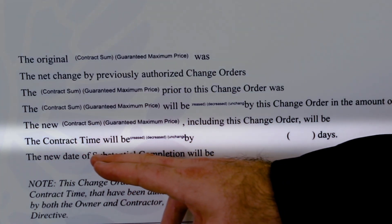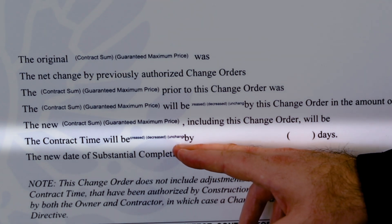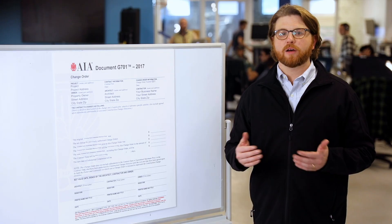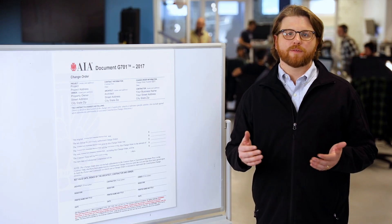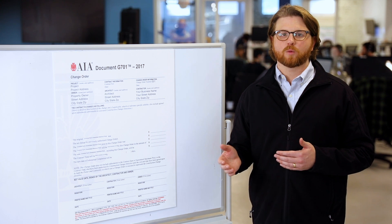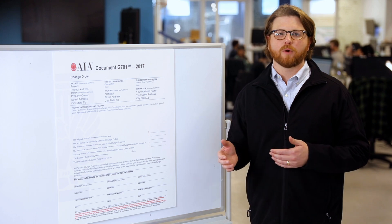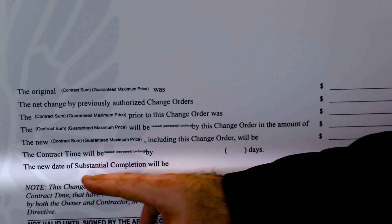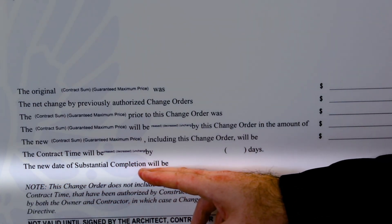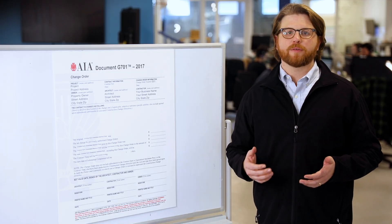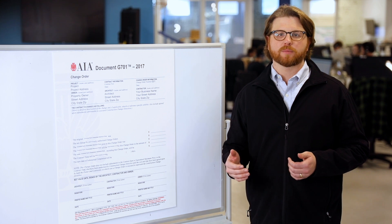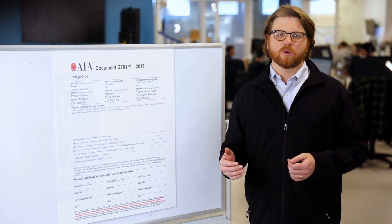The next line says contract time will be increased, decreased, or unchanged by a certain number of days. Here you'll need to add how the change order will affect the performance time — in other words, how will the changes affect the date of substantial completion? Will you finish sooner, will the work take longer, or will you still finish on the originally agreed date? In the last line, enter the new date of substantial completion by adding or subtracting the affected days from the contract's original substantial completion date.